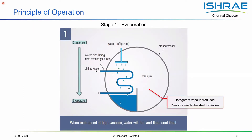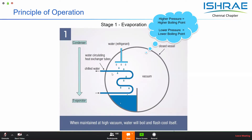When the refrigerant vapor is produced, there is a slight increase in pressure inside the chamber. To maintain a constant chilled water outlet temperature, we need to ensure that the vacuum levels are kept constant. This is done by the next heat exchanger, which is called the absorber.